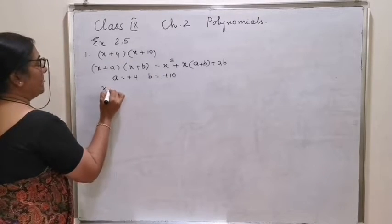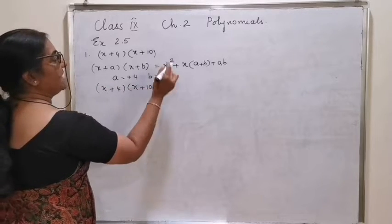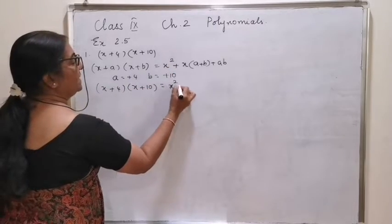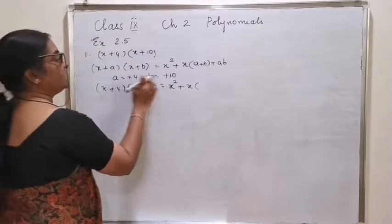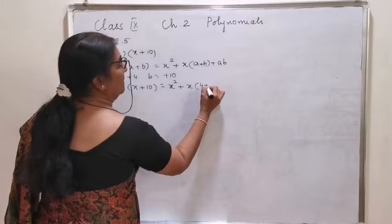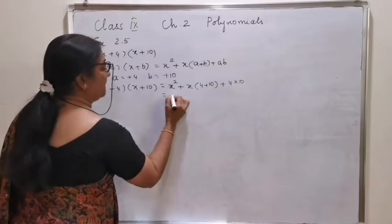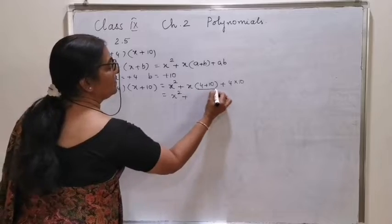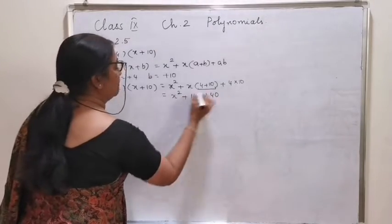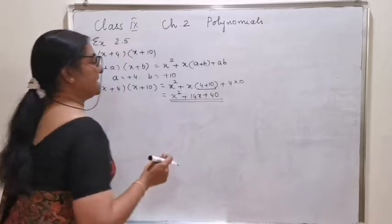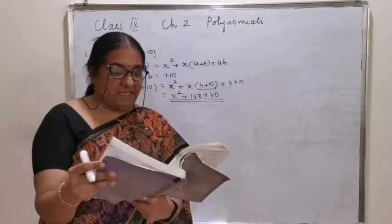Therefore, x plus 4 into x plus 10 is the same as x square plus x into a is 4 and b is 10: 4 plus 10, plus 4 into 10. x square plus 4 plus 10 is 14, so 14x plus 14. The first answer is x square plus 14x plus 14.